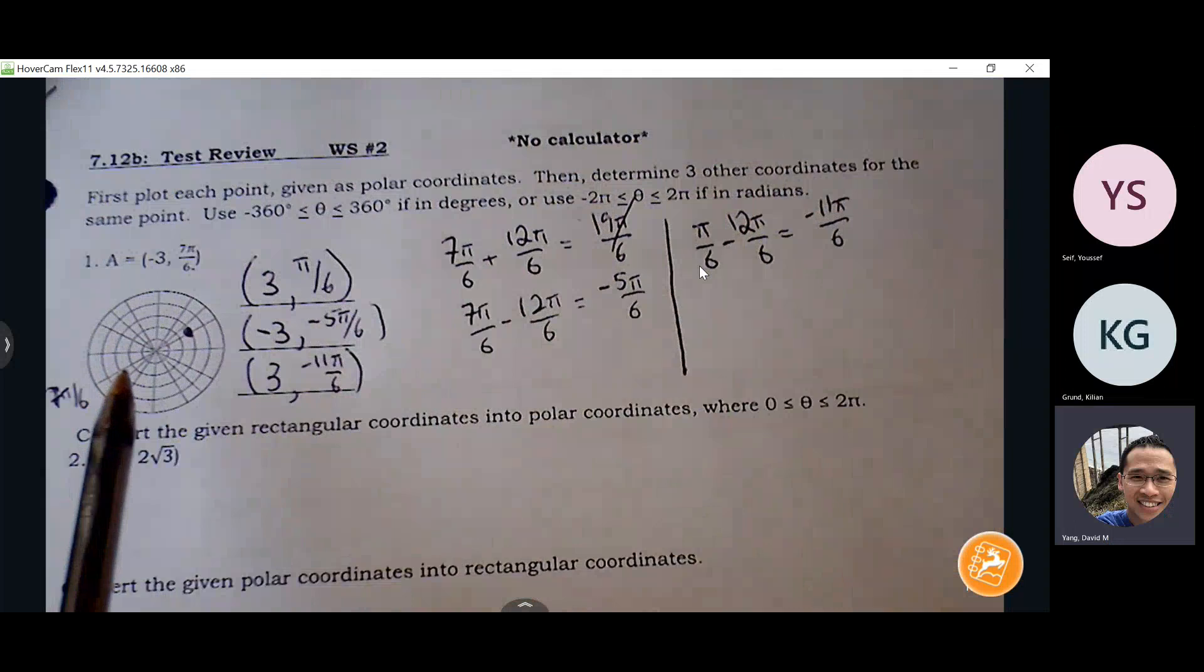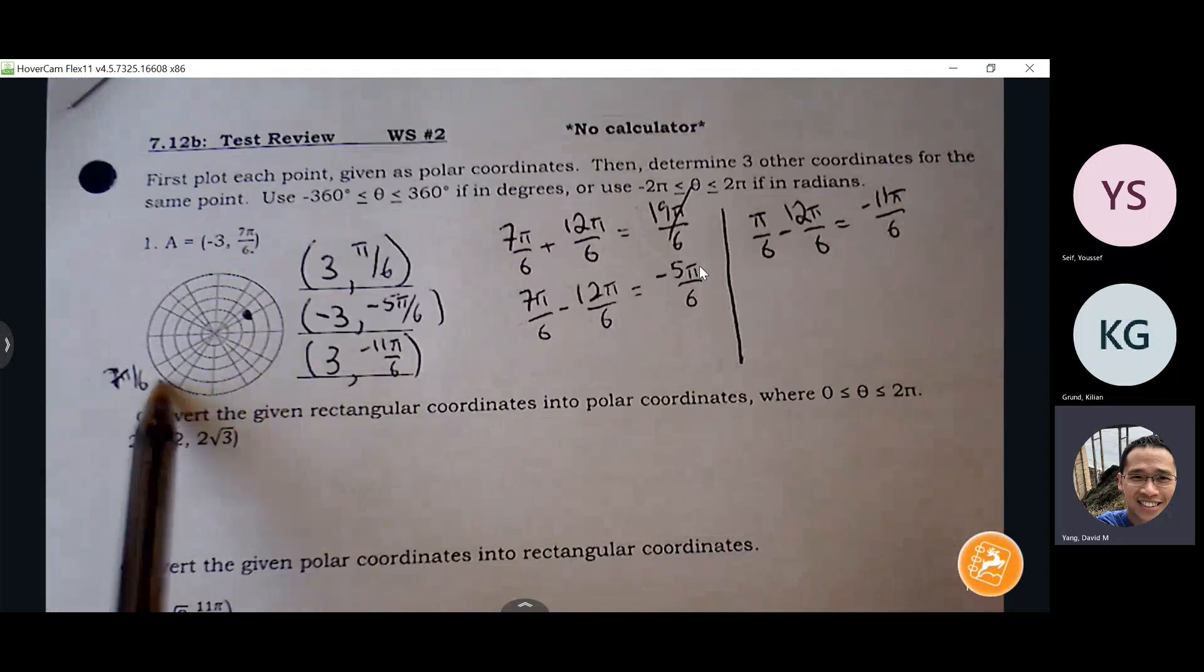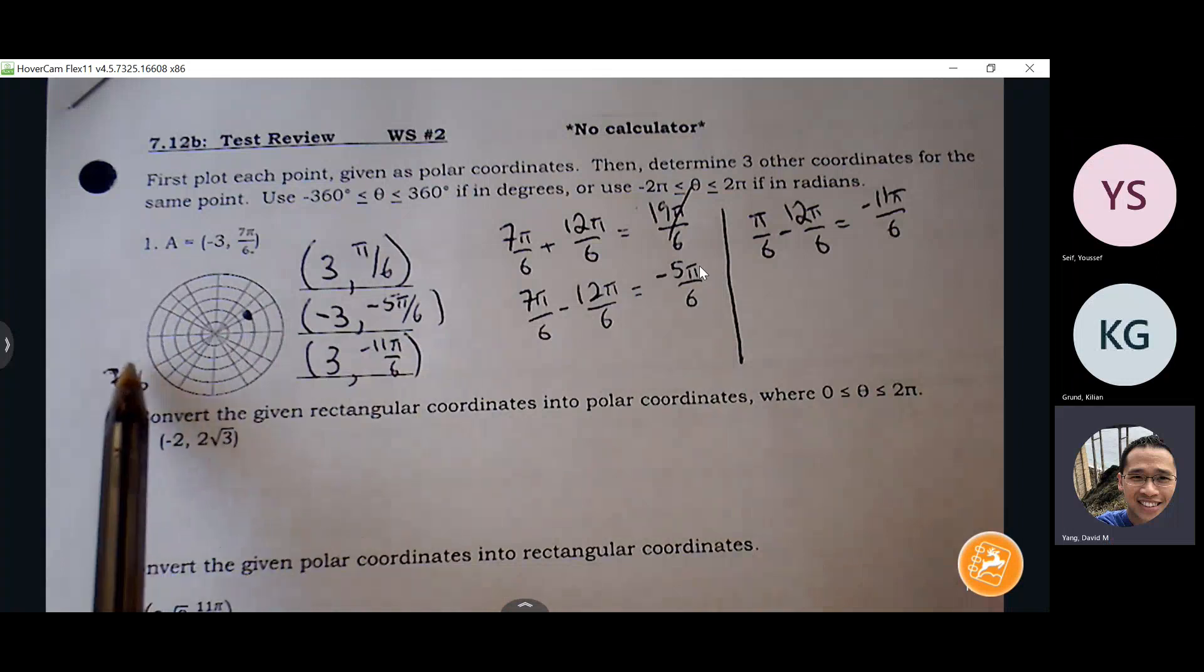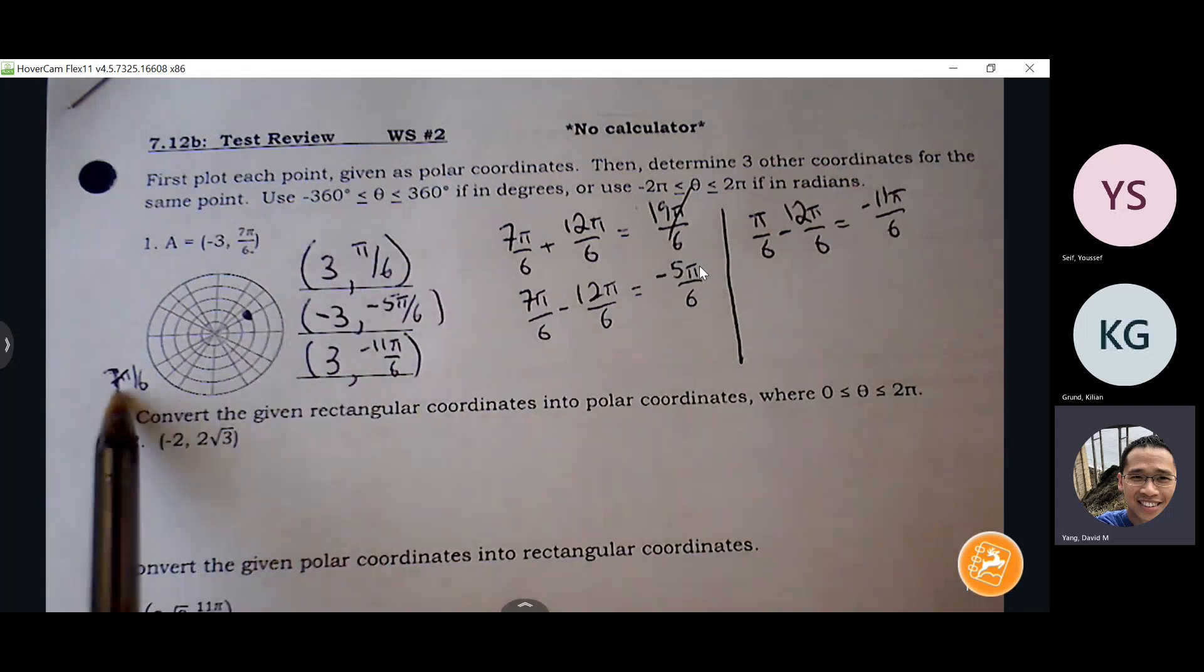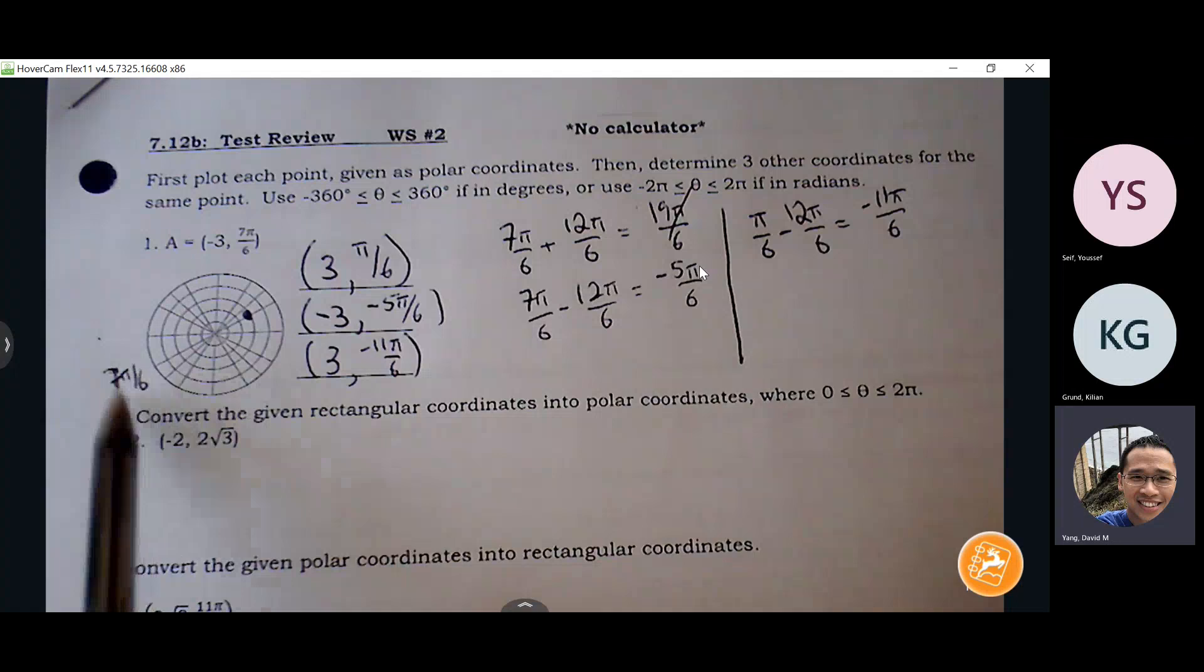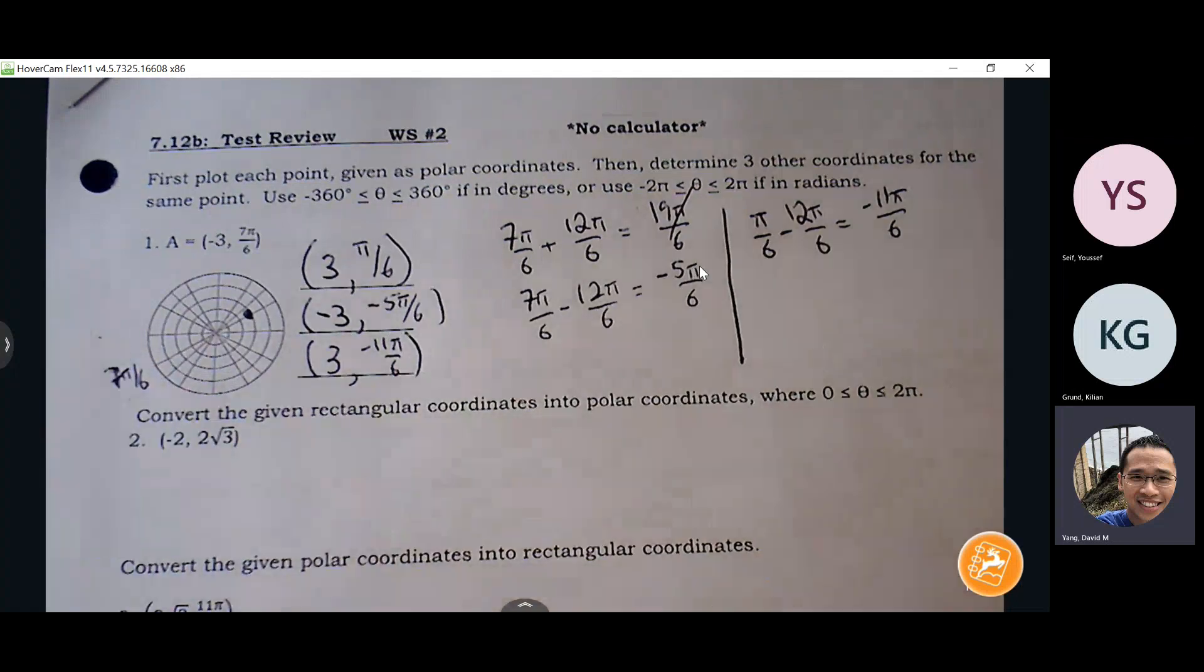The only time you want to add or subtract pi is if you're trying to get to the opposite quadrant. Let's say you knew that you're dealing with seven pi over six, but you want to get to the pi over six. You can subtract pi to get to pi over six, but if you're trying to find something that's the same as the quadrant you're living in, then you're either adding or subtracting two pi.